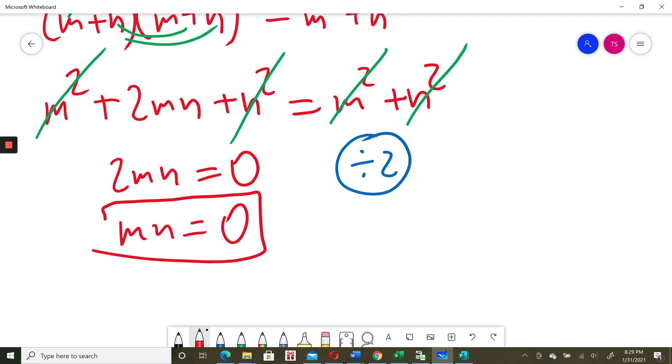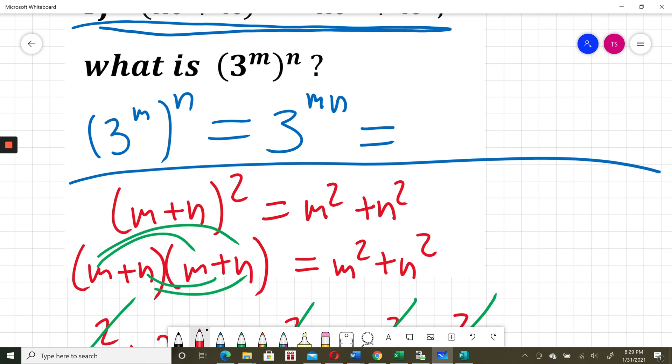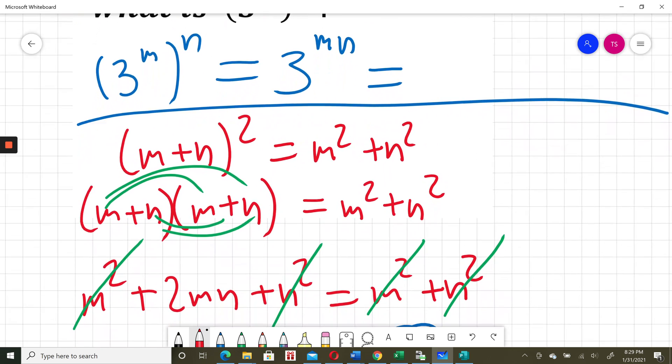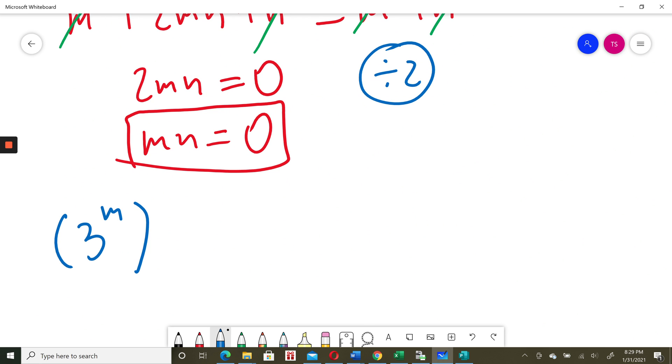I'm going to use this result. I calculated that (3^m)^n = 3^(mn). Since mn = 0, this equals 3^0, and 3^0 equals 1.